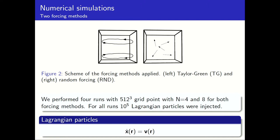We performed four runs with 512 cubed grid points, with N equals 4 and 8 for both forcing methods. For all simulations we injected 100,000 Lagrangian particles — these are fluid particles, so at each point their velocity is the same as the fluid.